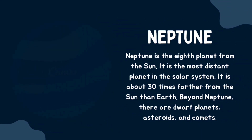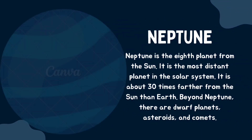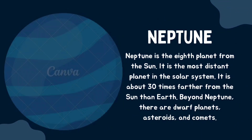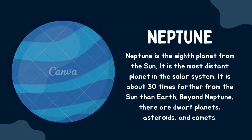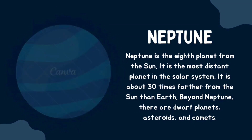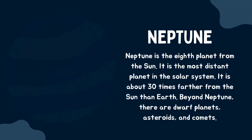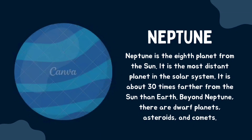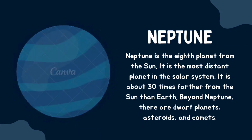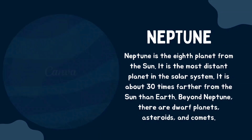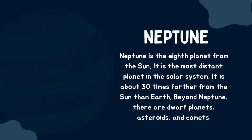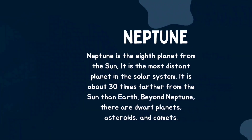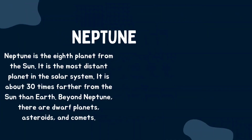Next we have Neptune. Neptune is the eighth planet from the sun and the most distant planet in the solar system. It is about 30 times further from the sun than Earth. Beyond Neptune, there are dwarf planets, asteroids, and comets.